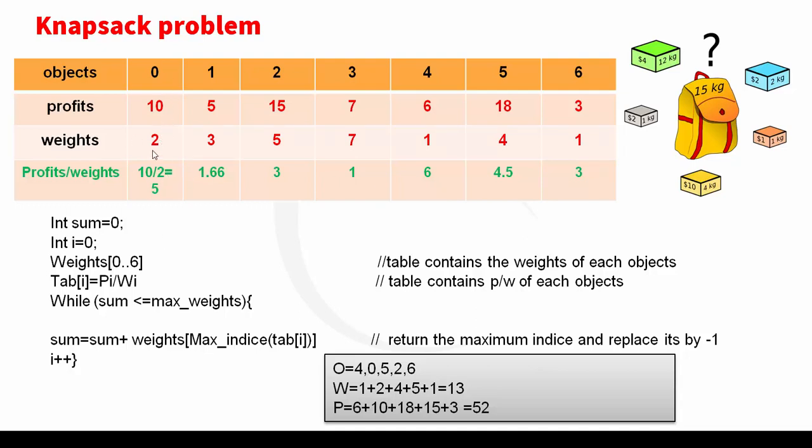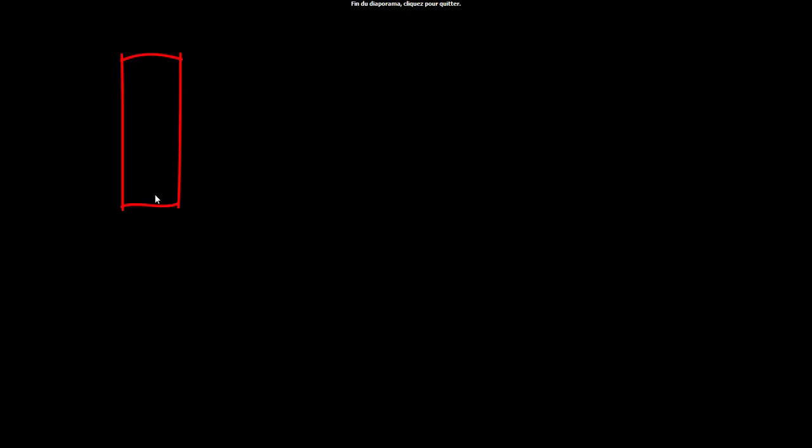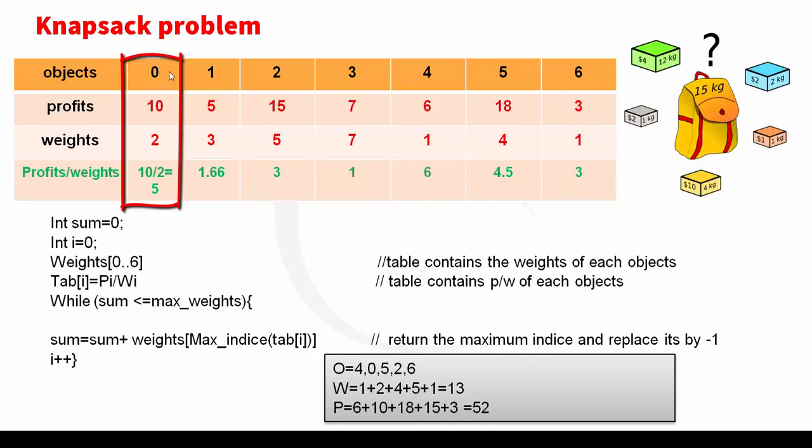In our case, this column, 4. I take the 0 object, as we see, and I add the old weights into new weights. So 1 plus 2 is 3. 3 is less than 15.